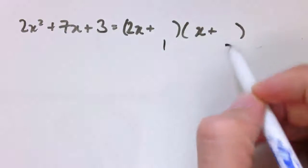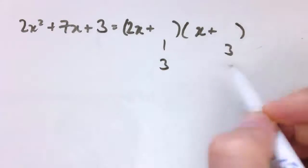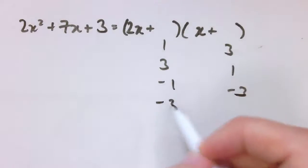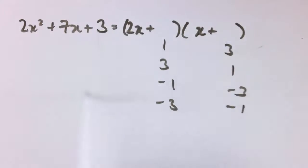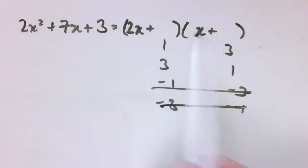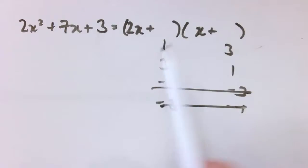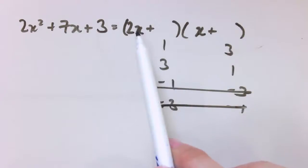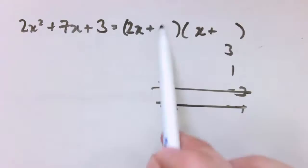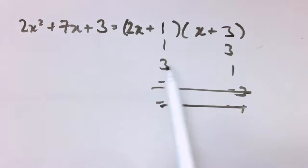For 3, it can only be 1 and 3, or 3 and 1, or minus 1 and minus 3, or minus 3 and minus 1 — but with plus 7 here, the negatives won't work. So I've only got two choices: either 2x plus 1 times x plus 3, or 2x plus 3 times x plus 1. Trying 1 and 3: 1 times x gives x, and 3 times 2x gives 6x — that's 7x, which is what we want. The other way around gives 3x and 2x, so 5x — that wouldn't have worked.